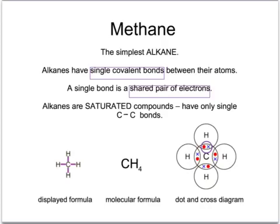That single bond is made out of a shared pair of electrons, as you can see from this diagram. You wouldn't have to understand this at this stage — this is more for next year — but you can see that around the carbon, it's got four of its own red electrons, and it shares four more with four hydrogens, so that you can get what's called a full shell of eight. Each of those pairs of shared electrons represents a single covalent bond.